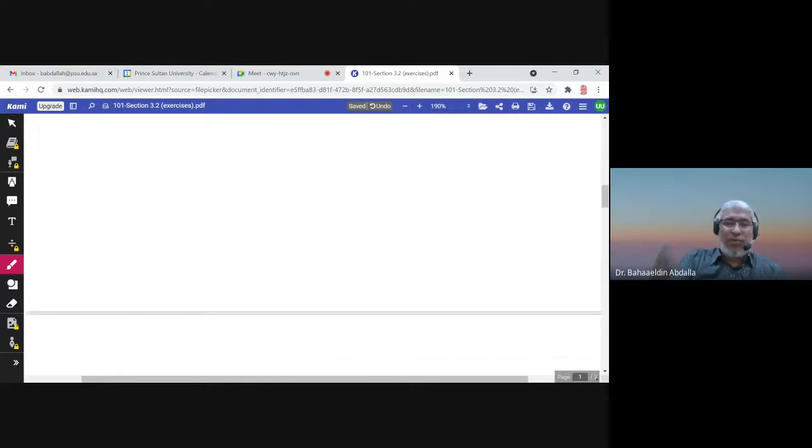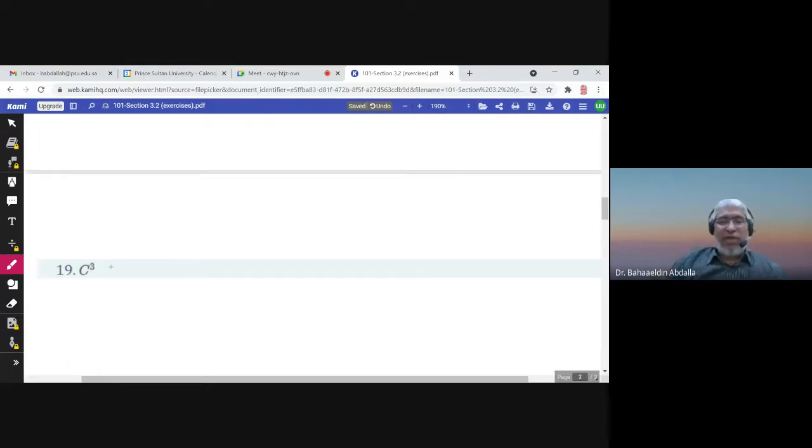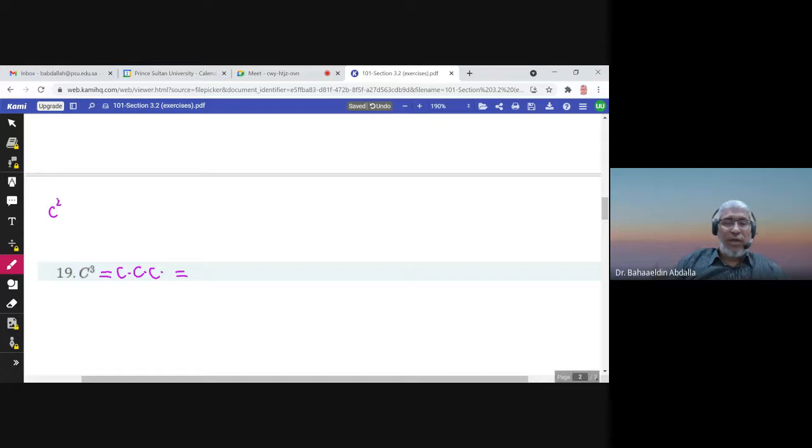C cubed. To find C cubed, we just multiply C times C times C, 3 times. To do that, let us find C squared first. I will multiply C times C. Let me find C squared first. C squared is C times C.